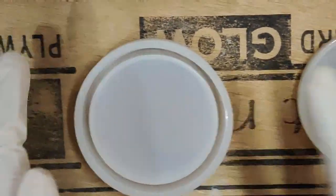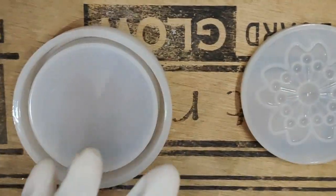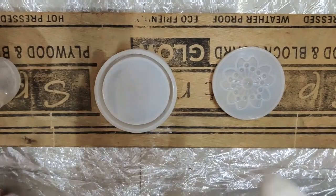This is the mould I will be using. This is the jewellery box. This is the base of the box and that's the lid.